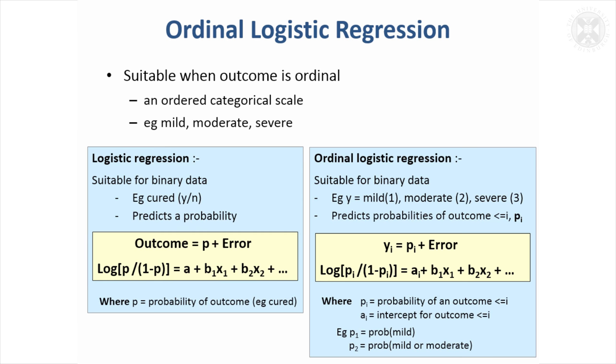But now we've got several outcomes. The trick in ordinal logistic regression is that it partitions these outcomes, predicting probabilities of the outcome being in a category less than or equal to i. So you predict the probability of being mild, and then adapt the model to predict the probability of being mild or moderate.